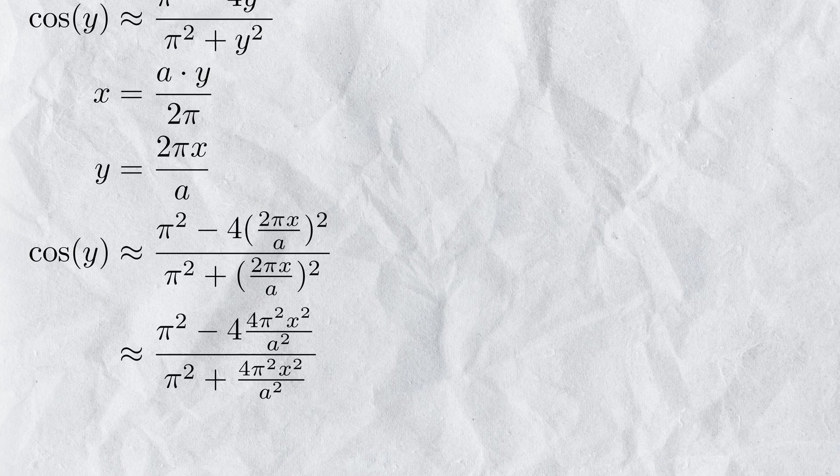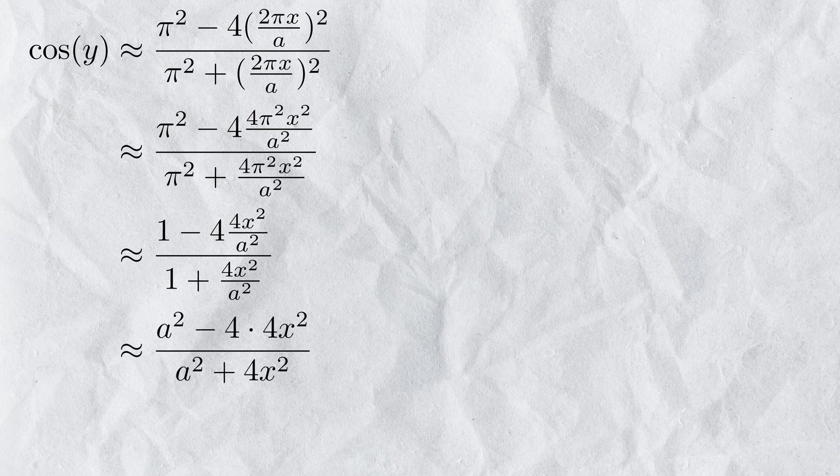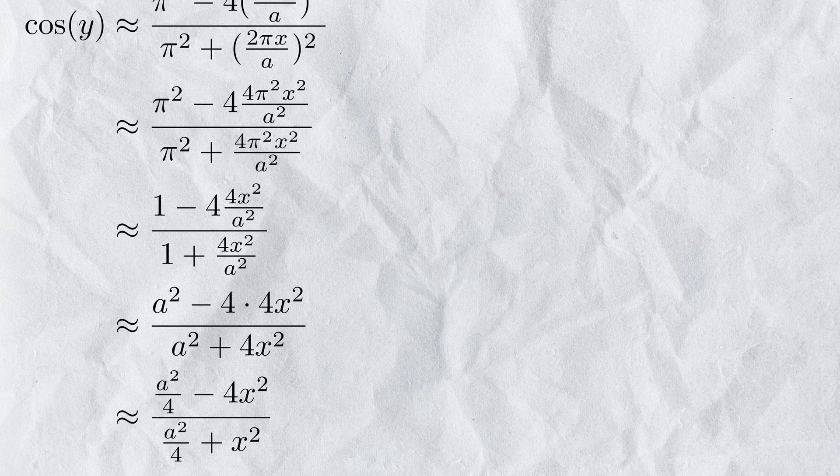We can fill this in the original equation. Bring the squaring inside the brackets. Pies cancel each other out. Get rid of the divide by a squared. Some more rearranging.